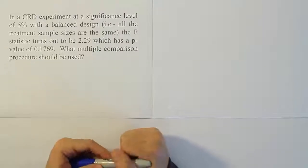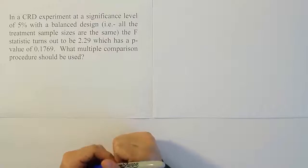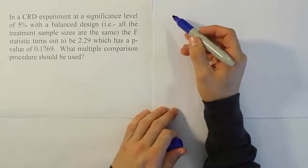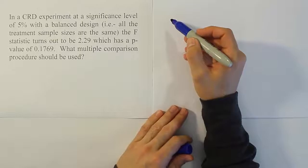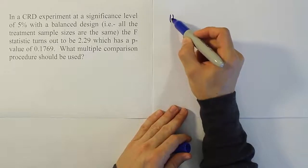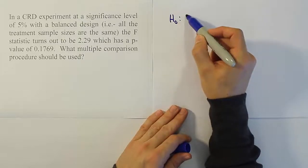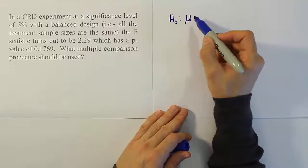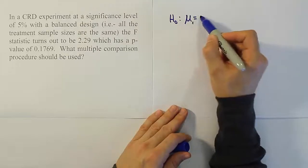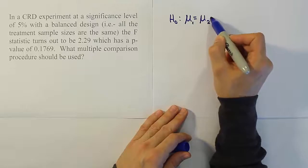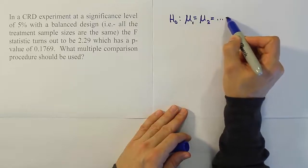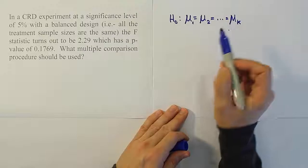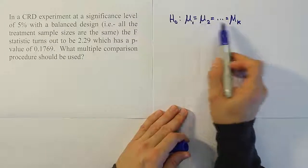The first thing you want to ask yourself is: did we reject the null hypothesis? We should only use a multiple comparison procedure when we have rejected the null hypothesis. Recall that the null hypothesis says that all the means are equal — all the k-treatment means are the same.